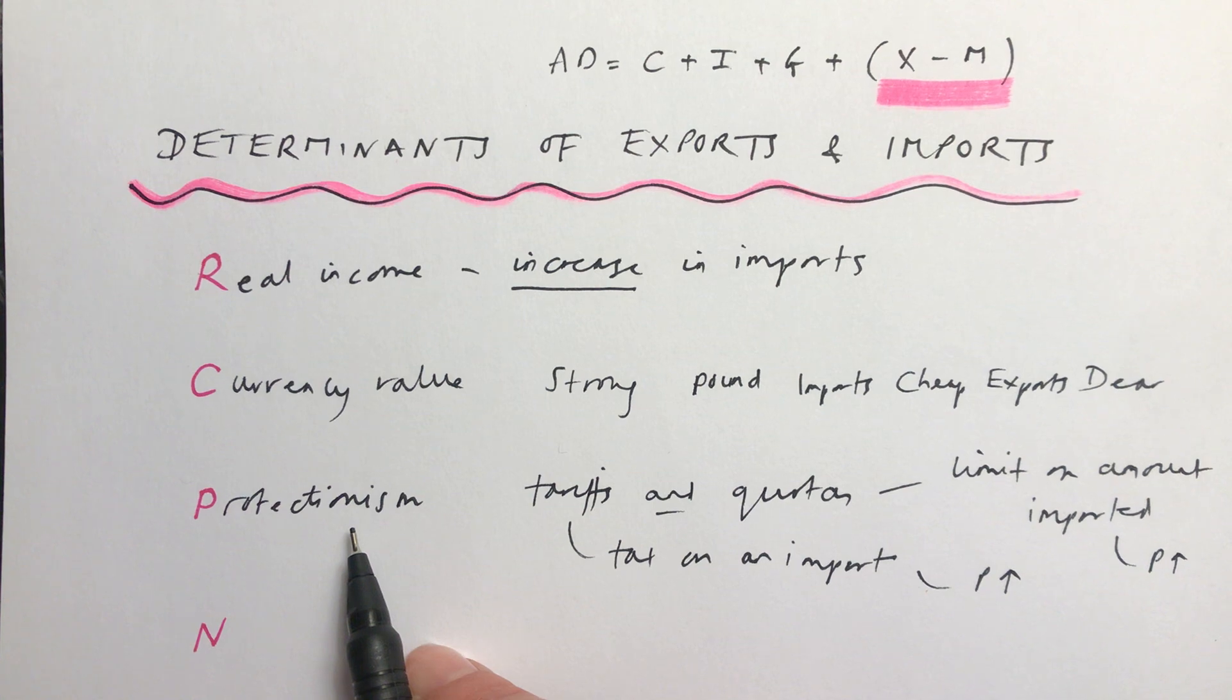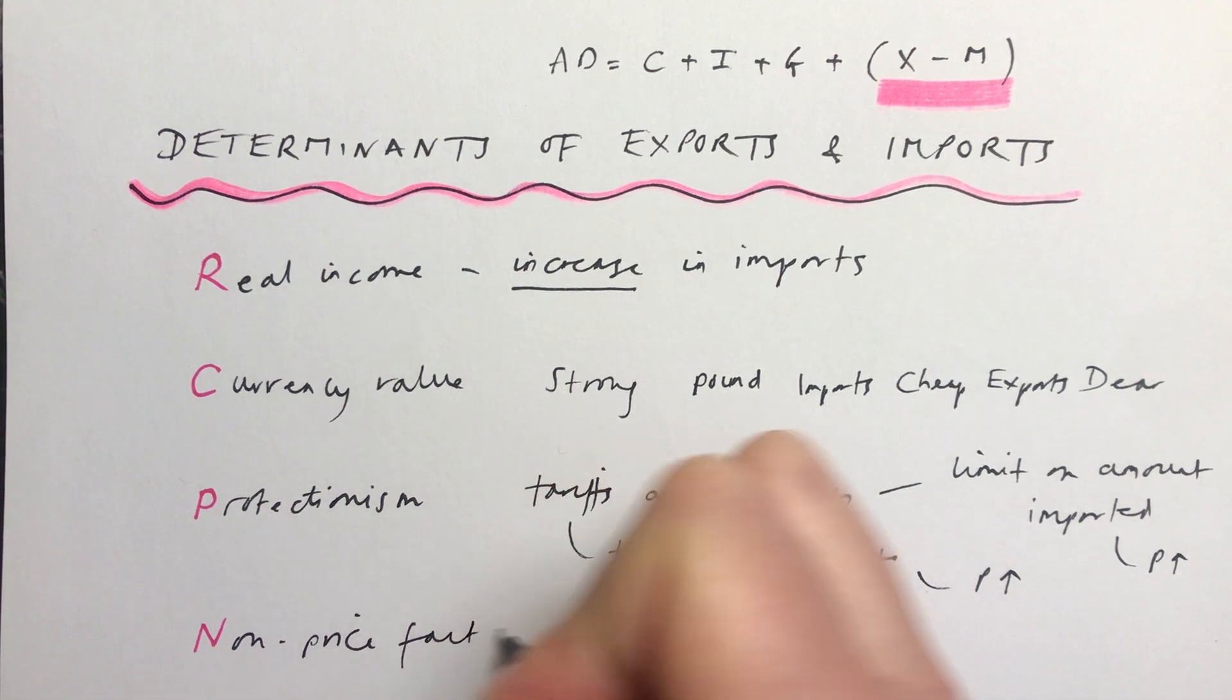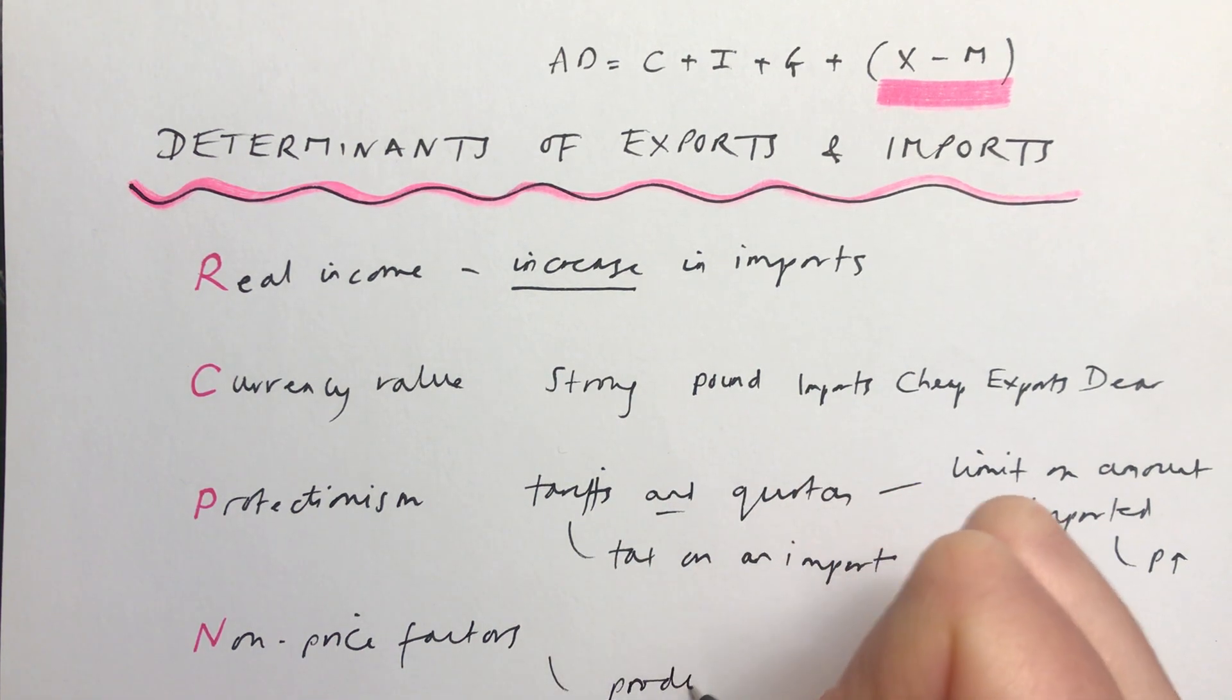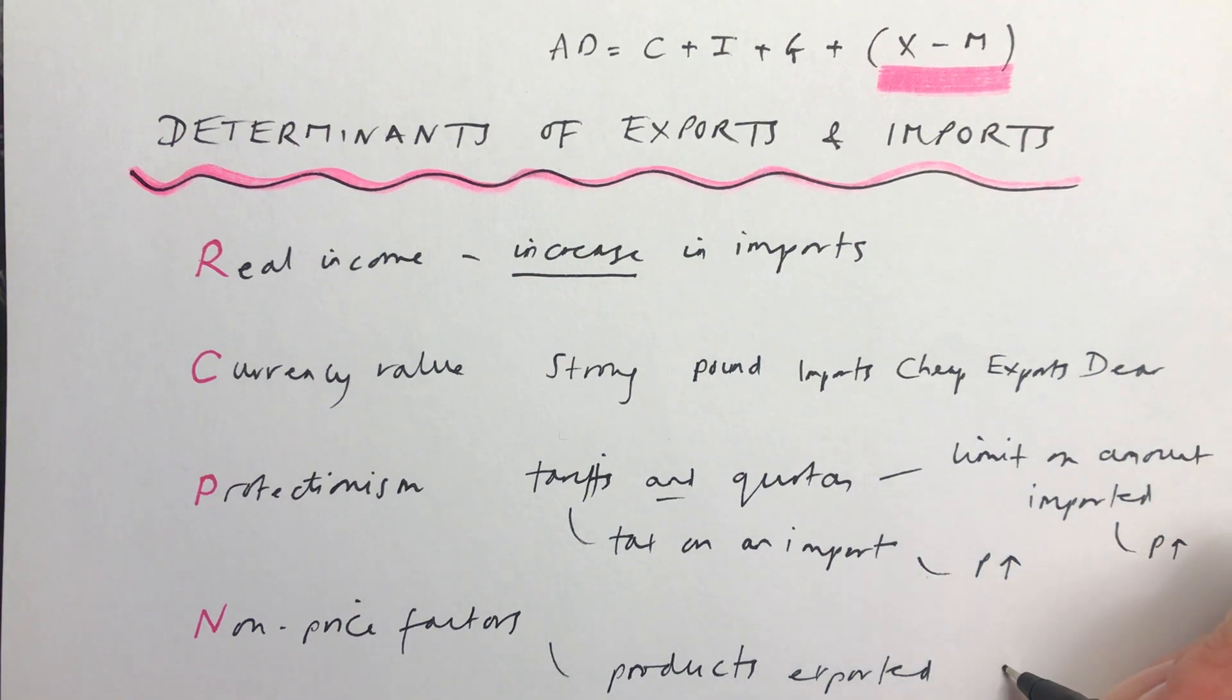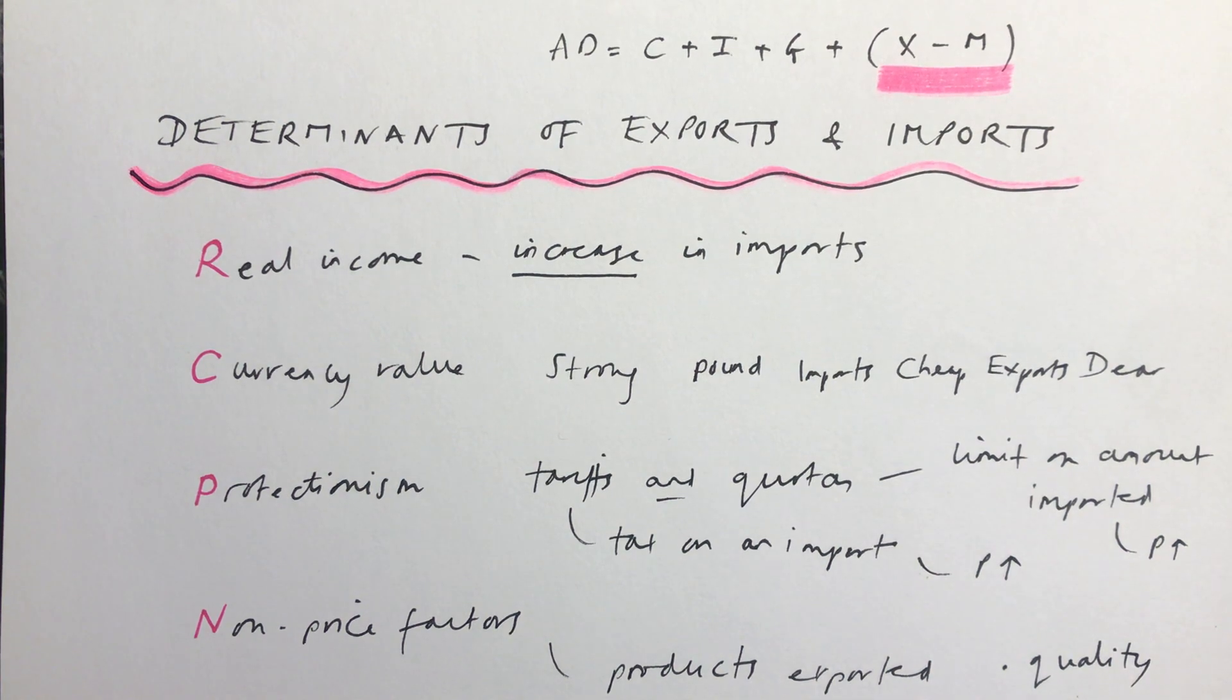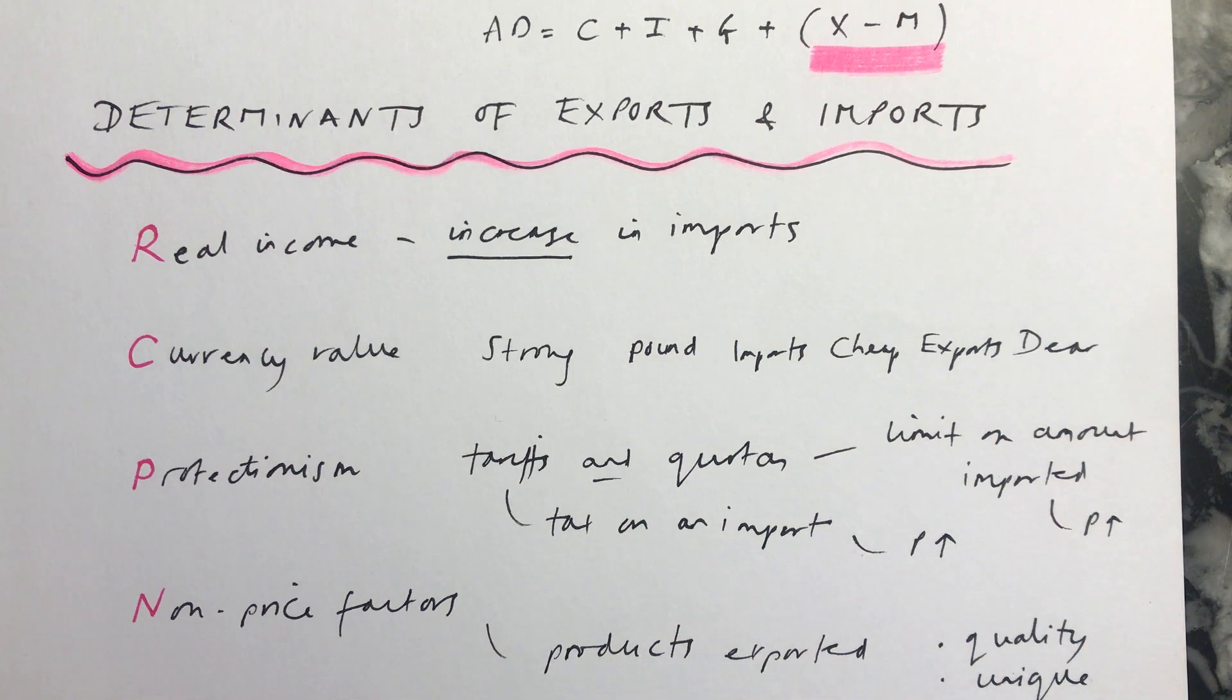The last one is non-price factors. This is to do with the products, goods, or services which are being exported or imported. If the quality, for example, of your products is very high, you're more likely to be able to export more products. Also, if something you are making as a country is unique, you're the only country making it, then that will be another reason that you probably will export more.